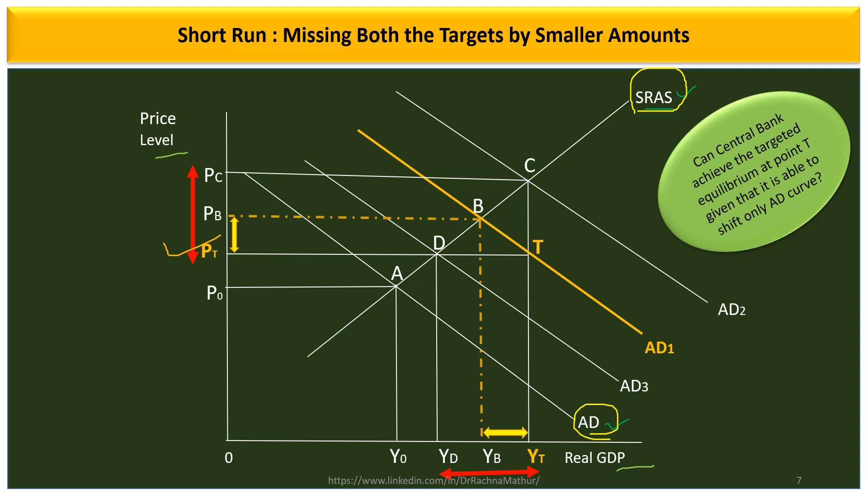This clearly shows that the central bank has a shortage of policy instruments, and it misses both targets by a smaller amount. Since it lacks enough policy instruments to achieve its targets, there is always a trade-off — the achievement of one goal comes at the expense of another, where both targets are missed by a smaller amount.